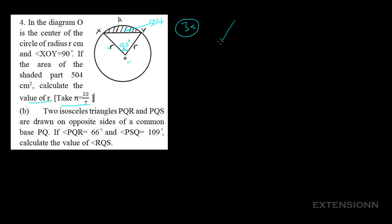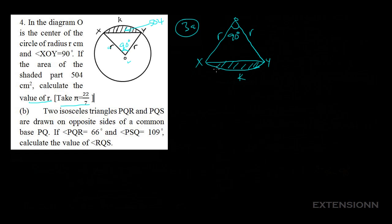We are asked to calculate the value of the radius. What we will do is bring out the sector OXKY. We can shade this part — that is the area of the shaded part. You notice that the area of the triangle plus the area of the shaded part gives you the area of the sector.